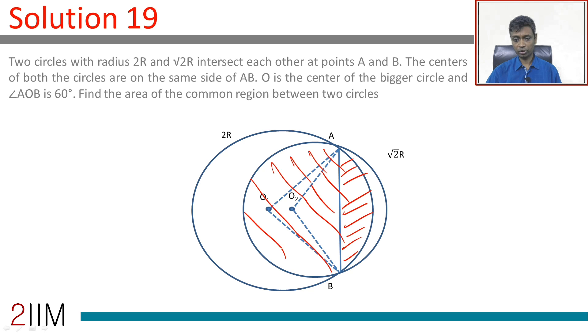First up let us do some simple geometry. So, the radii of the large circle is 2R, this angle is 60 degrees. Looking at an equilateral triangle. So, this will be 2R, 2R, 2R and 2R.